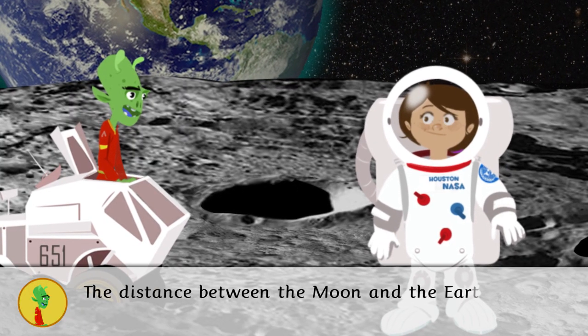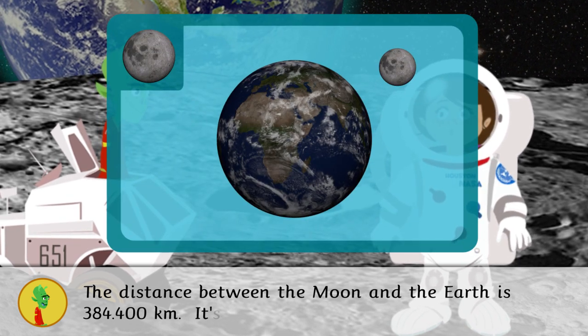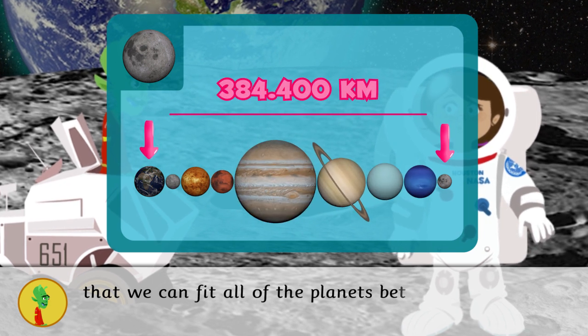The distance between the Moon and the Earth is 384,400 kilometers. It's not that close, is it? Did you know that we can fit all the planets between them?